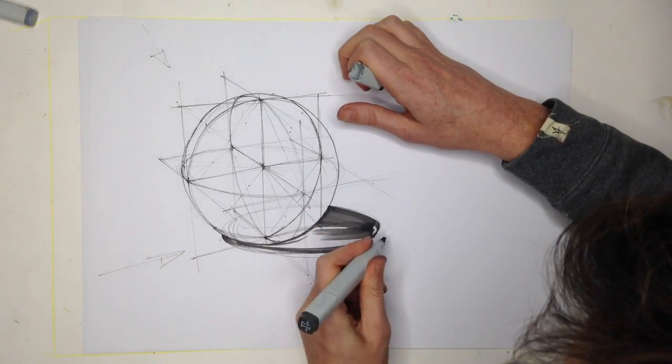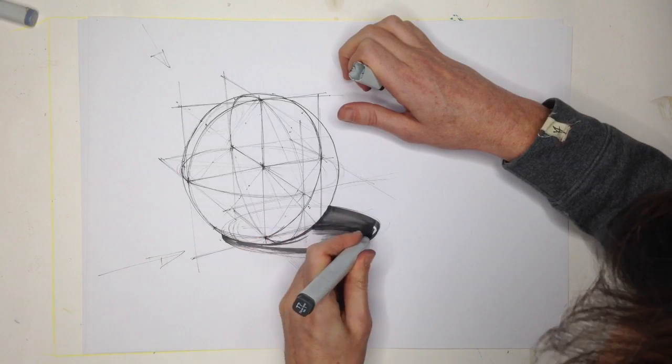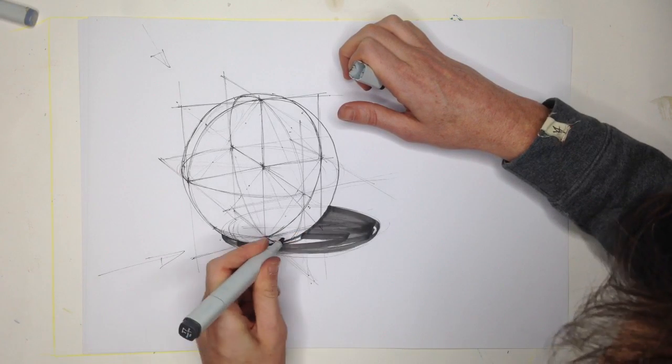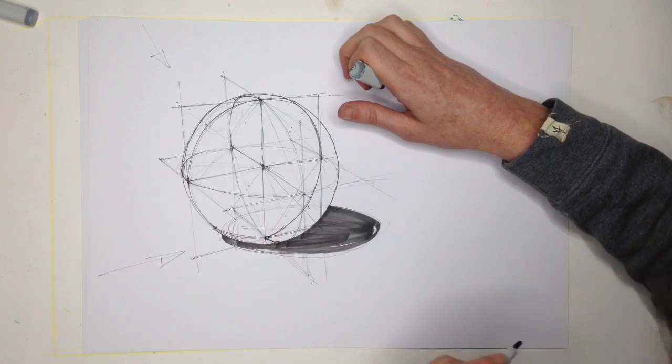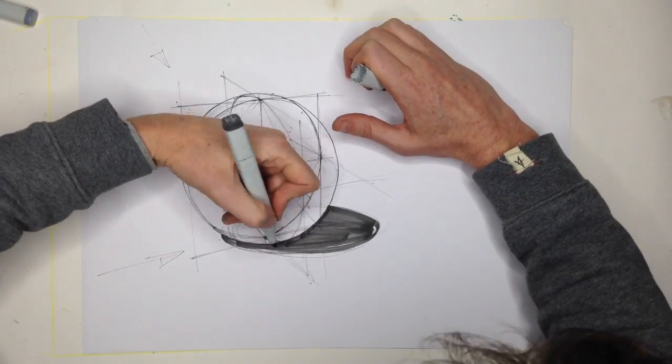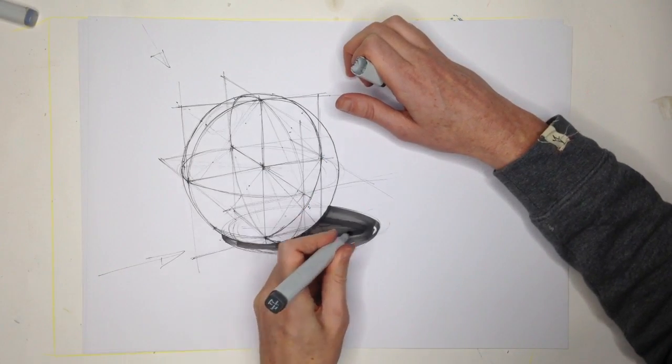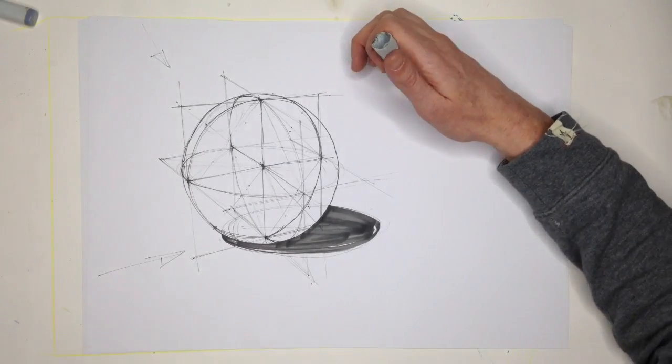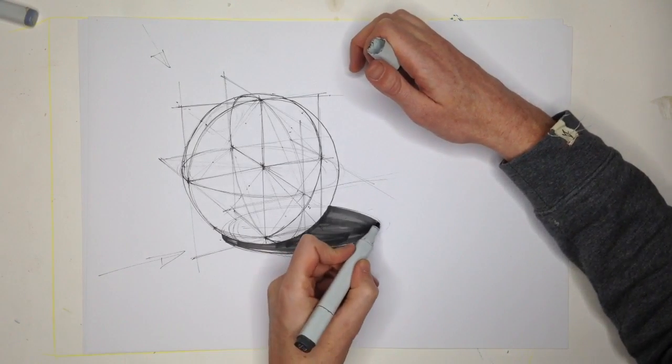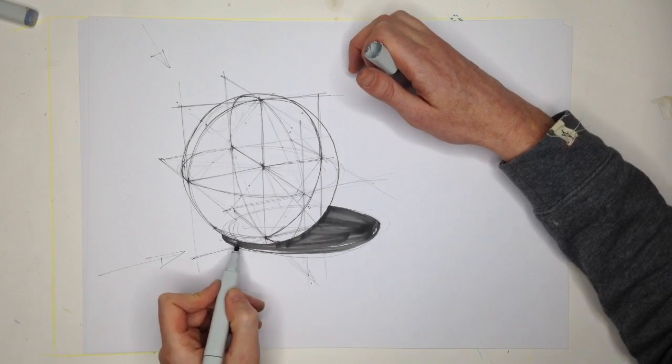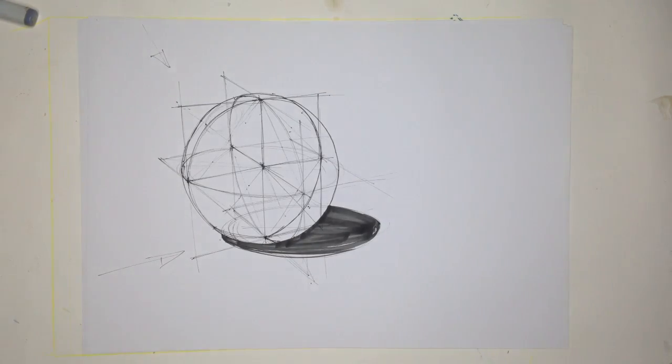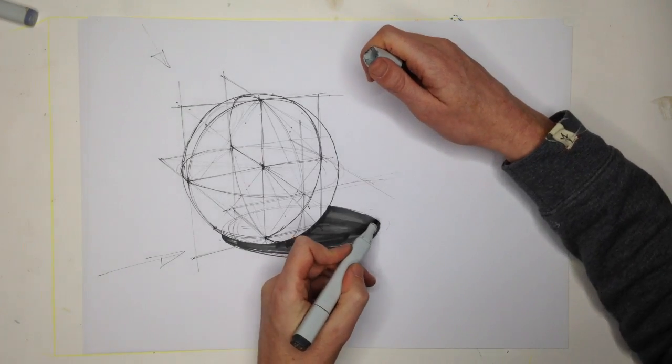So once you've got that main edge, it's a quick and effective way of giving that some volume. Okay, so that's the cast shadow.